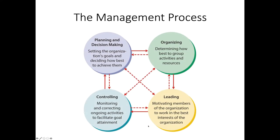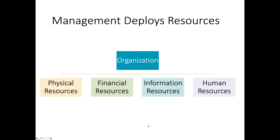This is a reminder from our previous lecture — video number two — where we defined the management process. The four functions were planning and decision-making, organizing, controlling, and leading. We said that in order to accomplish organizational goals, managers use these four functions along with resources that the organization either has or can get its hands on. So what kinds of resources are we really talking about?